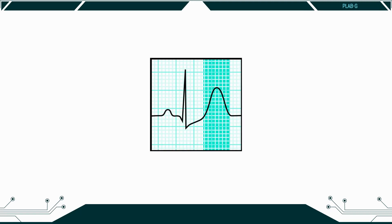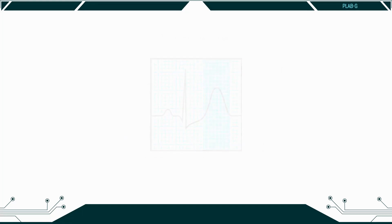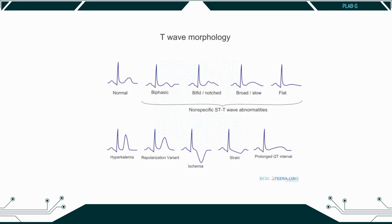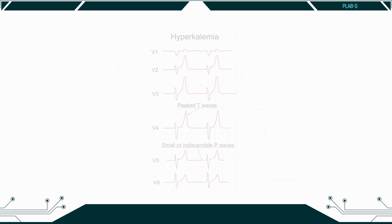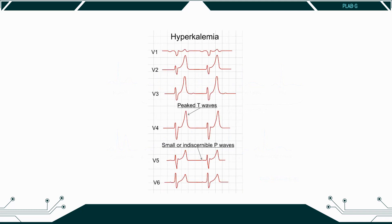The T wave can be flattened or inverted for a number of reasons. There is a normal variant of T inversion, commonly inverted in AVR and V1, and often in V2 and V3 in people of Afro-Caribbean descent. Other reasons are ischemia, ventricular hypertrophy, strain pattern usually seen in lateral leads, and left bundle branch block, in which there is T wave inversion in the anterolateral leads. Digoxin and hypokalemia can cause flattening of T waves. Hyperkalemia causes peaked T waves. The classic changes in hyperkalemia are small P waves, peaked T waves and wide QRS complexes. Widening of the QRS indicates severe cardiac toxicity.